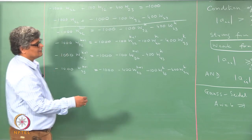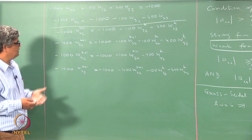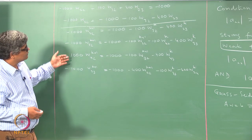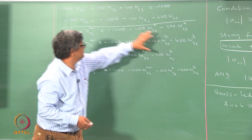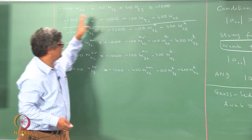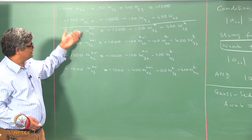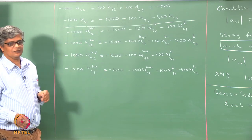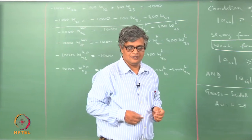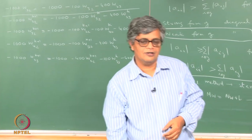Starting with zero initial guess values, we get the first set of values for all 9 unknowns. We substitute the first set on the right-hand side to get the second set, then use the second set to get the third set, and so on. If we keep doing this, we find that gradually the numbers converge. This should and will have to be done on a computer.